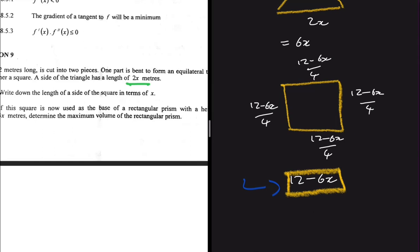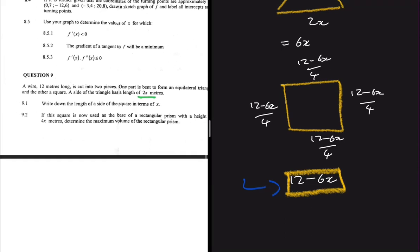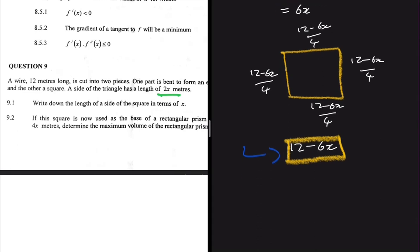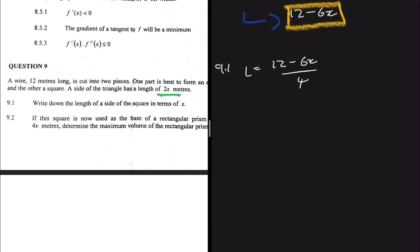Now we can start answering the questions. Question 9.1 asks us to write down the length of a side of the square in terms of x. We have already deduced that the length of a side of the square is (12 − 6x) divided by 4.